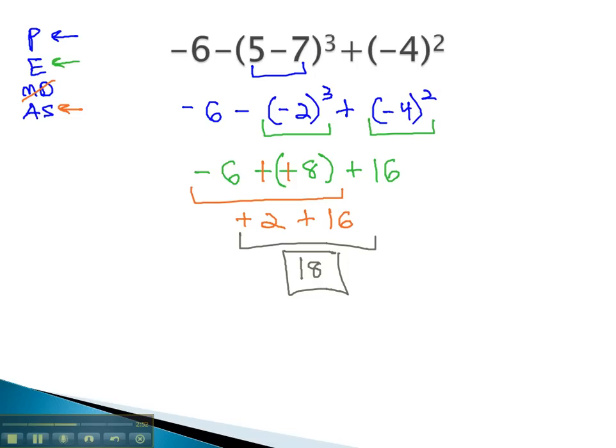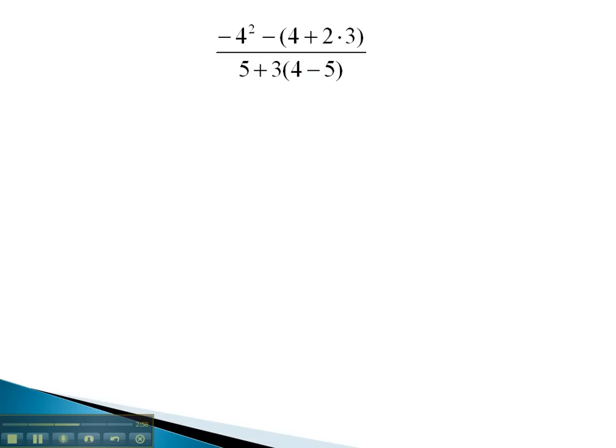Let's try one more problem that uses negatives in the order of operations. This problem looks like a fraction. Remember, a fraction has those invisible parentheses around the numerator and denominator, or the top and the bottom. So let's simplify the top and bottom separately, and then we'll put them together to make our fraction.